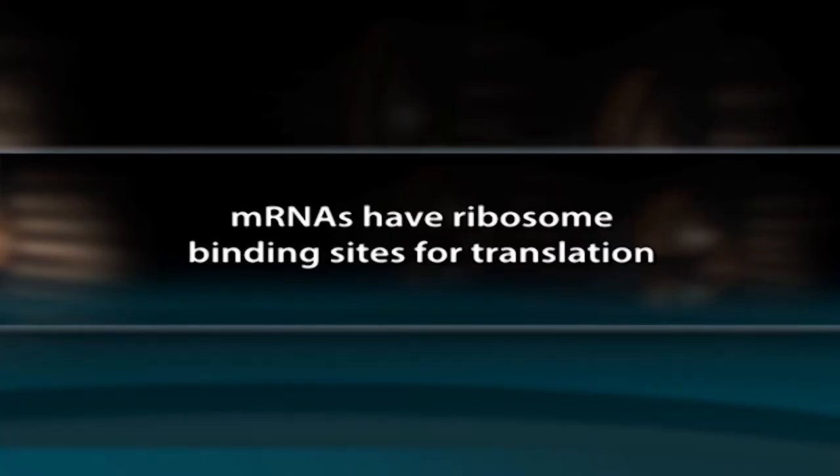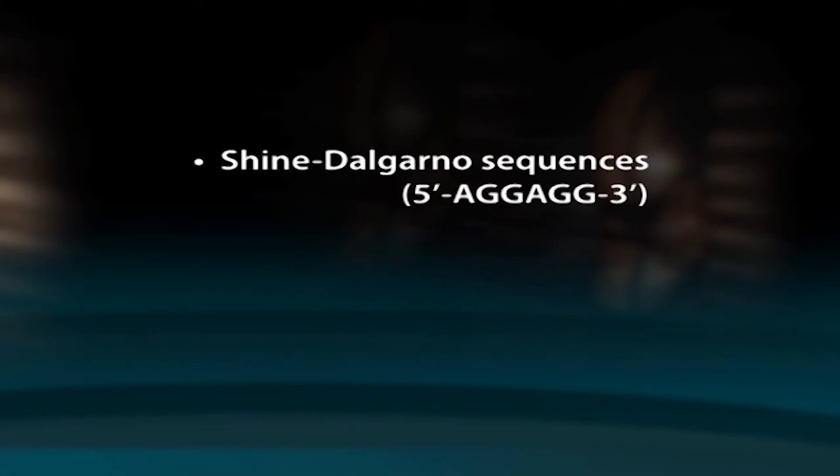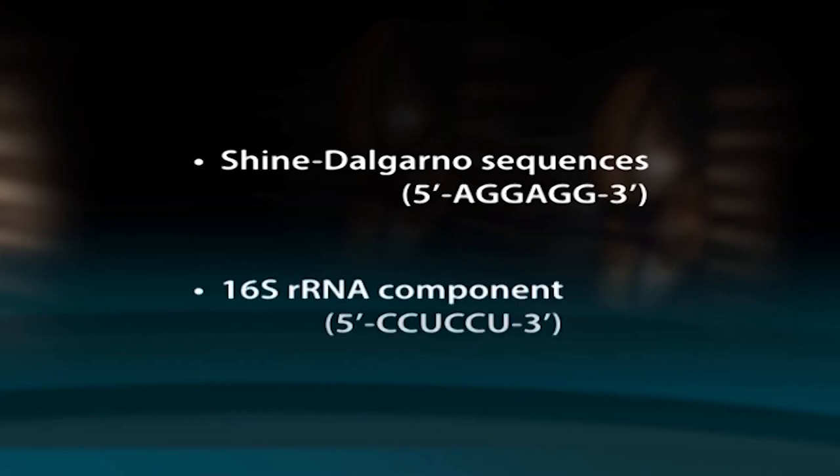mRNAs have ribosome binding sites for translation. Ribosomes must be recruited to mRNA for translation. In prokaryotes, the start codon is preceded by a region called the Shine-Dalgarno sequence (5'-AGGAGG-3'), which is complementary to the 16S rRNA sequence (5'-CCUCCU-3') of the ribosome. In eukaryotes, ribosome binding occurs via a methylated guanine nucleotide at the 5' end of mRNA called the 5' cap. In mammalian mRNA, conserved sequences 2–3 nucleotides upstream of the start codon called Kozak sequences also help stimulate translation.